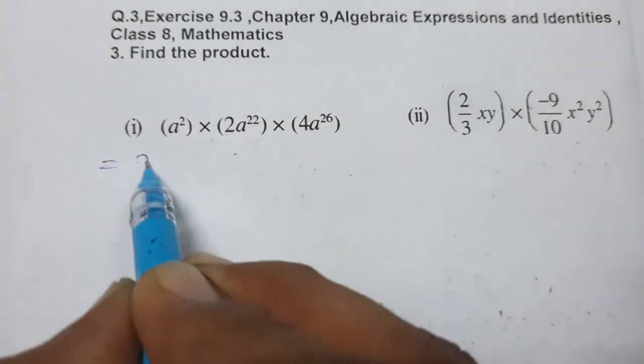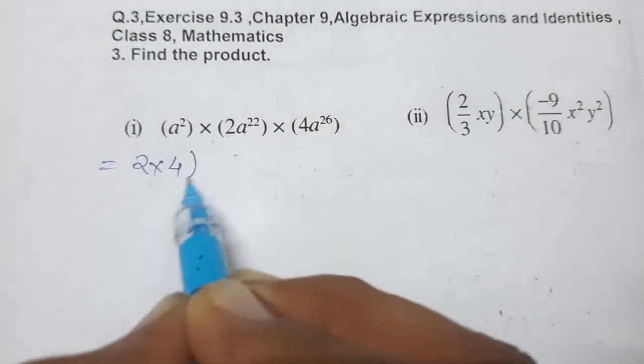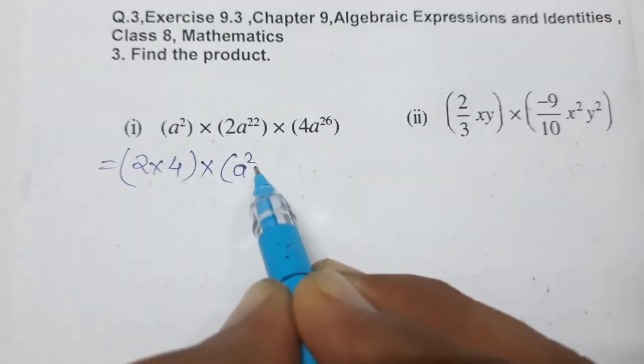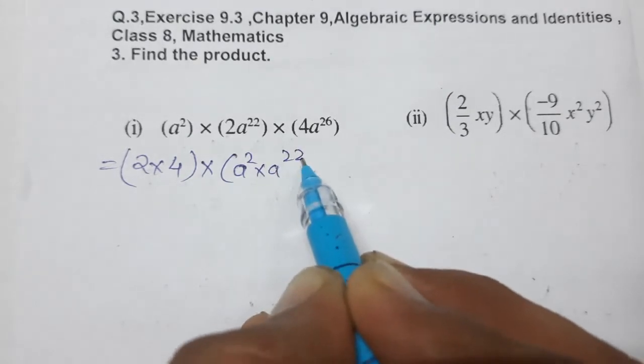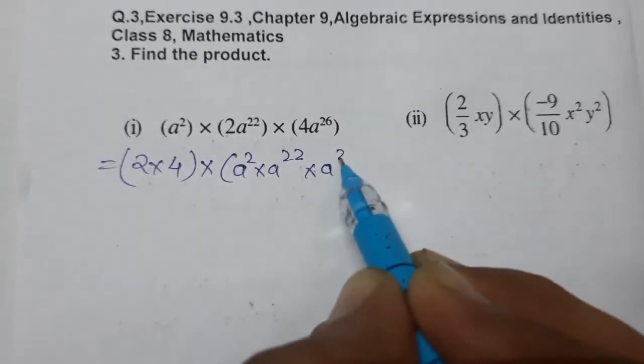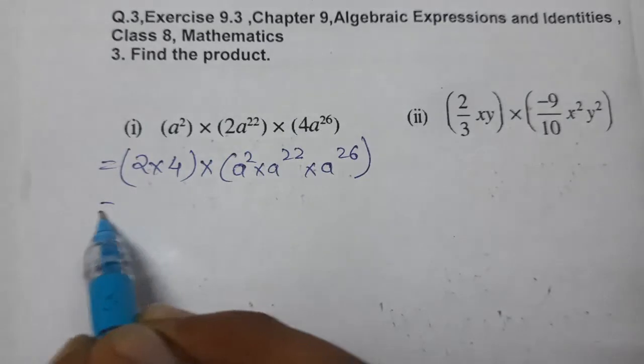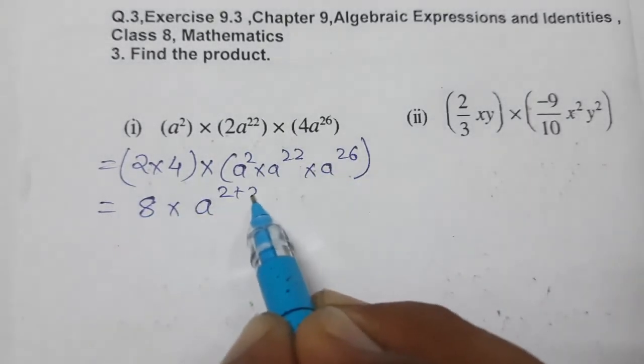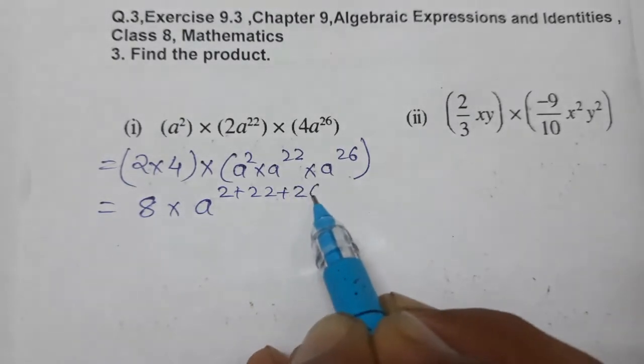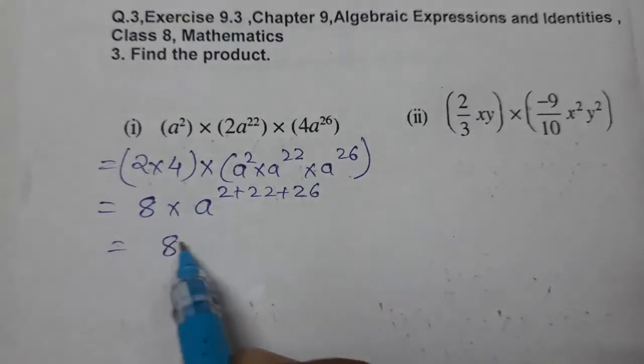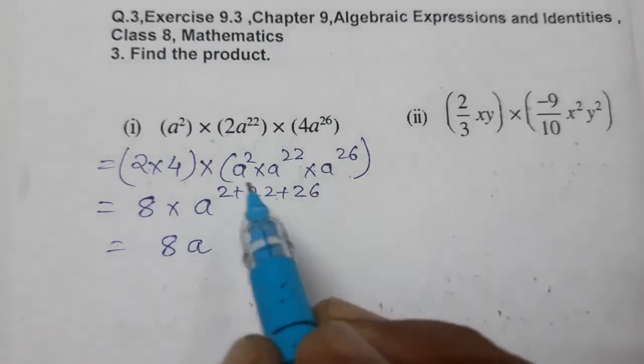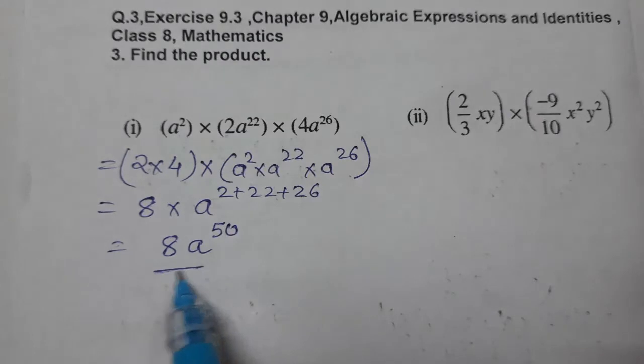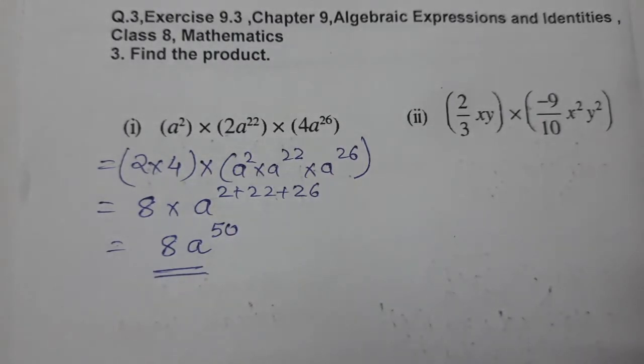So 2 into 4, only 2 into 4 is there. Now all variables: a raised power 2 into a raised power 22 into a raised power 26. Now 4 times 2 is 8, and when base is same we can add the powers: 2 plus 22 plus 26. So 8a raised power 50, this is the answer.